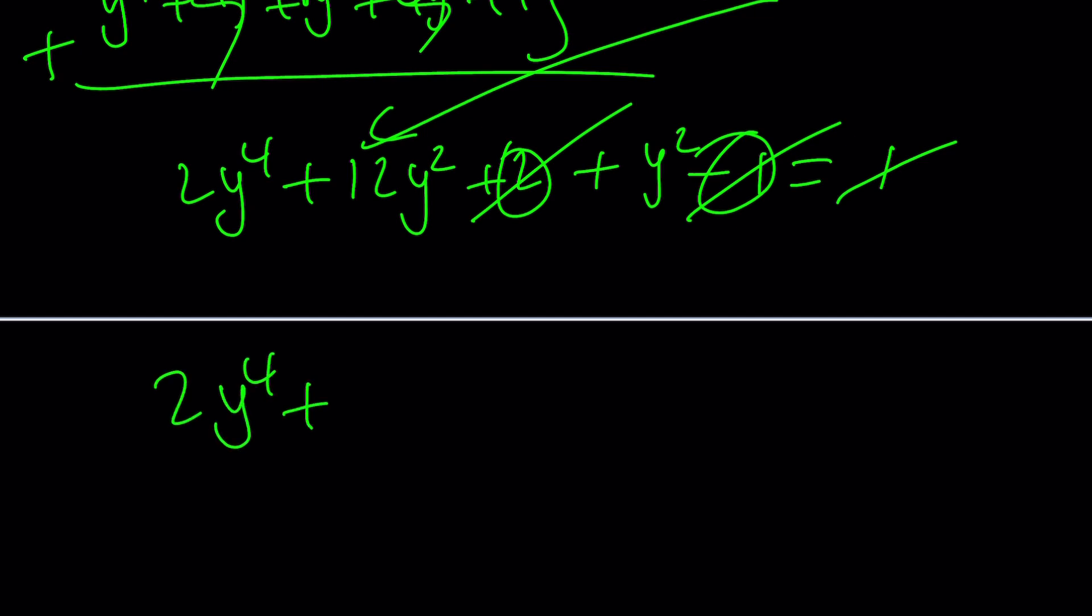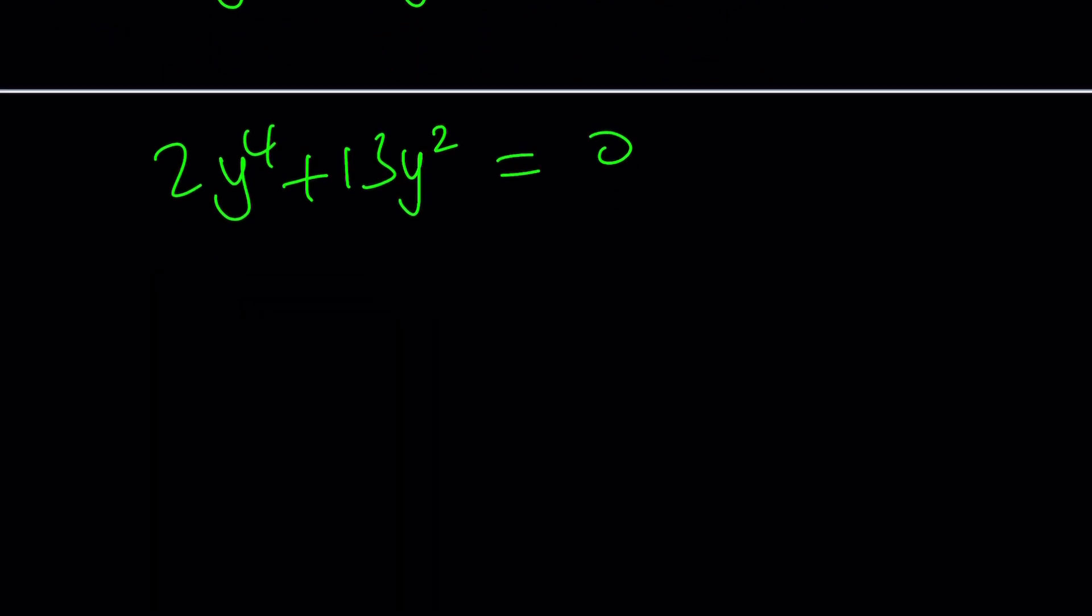2y^4 plus 13y^2 equals 0. And that's just amazing, right? Because now we can take out a y^2. This says y^2(2y^2 plus 13) equals 0. And from here, you only get one real solution, which is y equals 0. Yay!